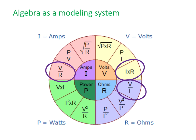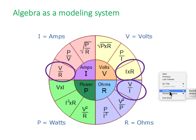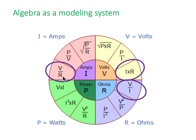Ohm's Law is just an algebraic modeling system. This is what we call the Ohm's Law wheel. In the center of the wheel we have current, voltage, and resistance. Starting with current: if we want to find what the current is, it's voltage divided by resistance. Current is proportional to voltage and inversely proportional to resistance. Therefore, the mathematical relationship is I equals V over R.